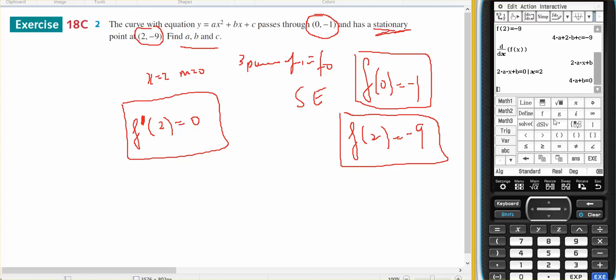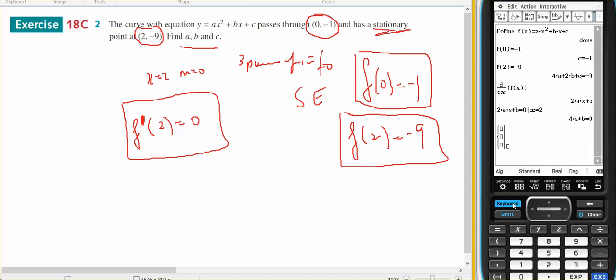Now I'm going to get my simultaneous equations and touch it twice to get 3. This is my first equation, this is my second equation, and this is my third equation. Three equations in terms of a, b, and c.